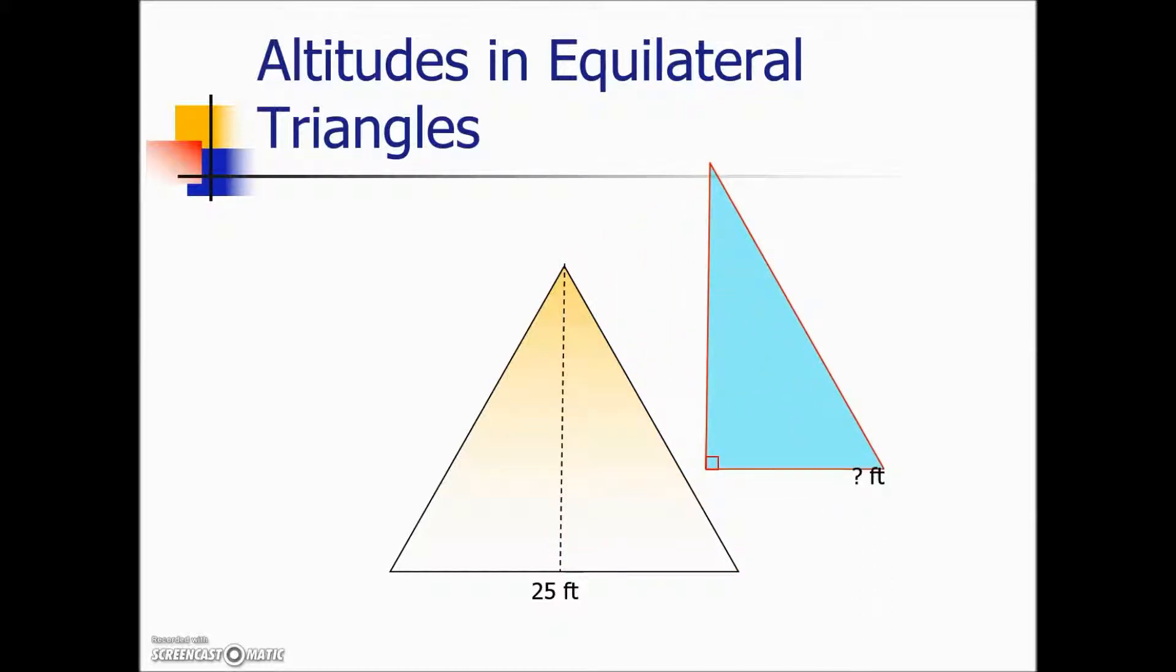If we're interested in finding the length of this bottom side of our right triangle from that altitude in this equilateral and the angle measurement, we're going to use those properties of the altitude. Because this is an equilateral triangle, all three angles are 60 degrees. The altitude bisects that vertex, which means our measurement is going to be 30 degrees in our right triangle that we just formed.